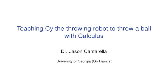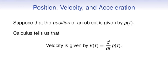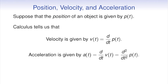Teaching Psi the robot to throw a ball with calculus. Suppose position is given by p of t. Velocity is given by the derivative of position, and acceleration by the derivative of velocity.